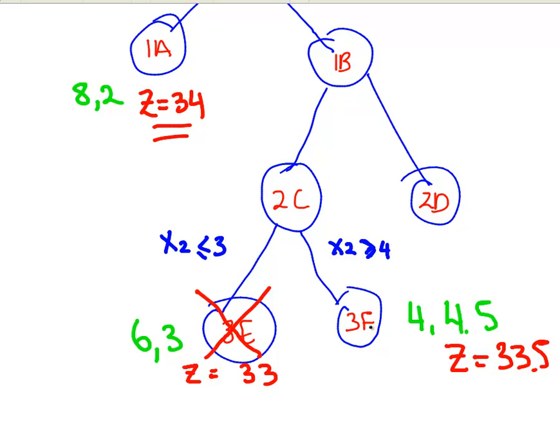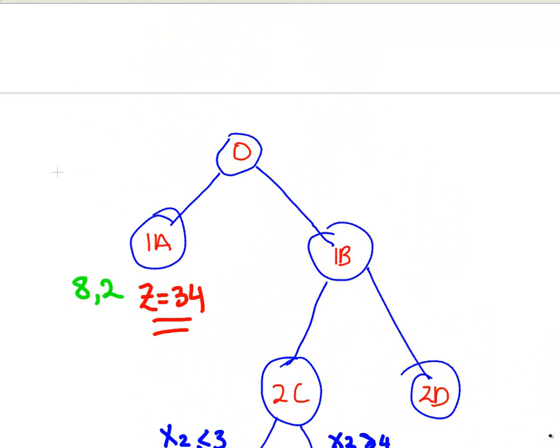Essentially, the best we can do from 3F or any of the subtree of 3F, the realization of the objective function at 3F, the best we can do there is 33.5. That is not as good as 1A, so essentially there is no point going any further. We have come to the end of the road, folks.